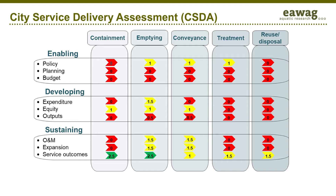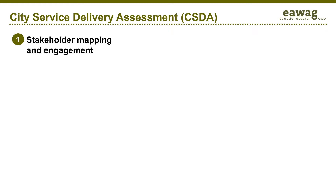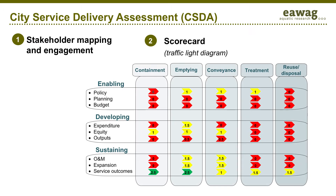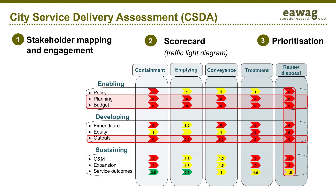The City Service Delivery Assessment process starts with stakeholder mapping and stakeholder engagement. Using evidence, the CSDA tool creates a traffic light diagram to help stakeholders see the whole existing enabling environment for sewered and non-sewered services. This enables the stakeholders to discuss and prioritize which parts need the most urgent development. This is usually a better process than writing long, complex reports, which are hard to understand and difficult to discuss.